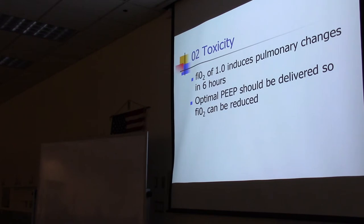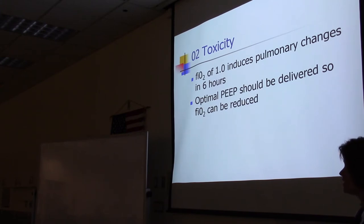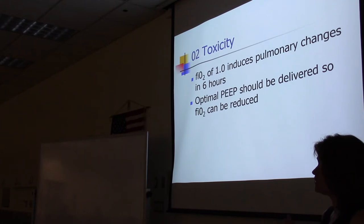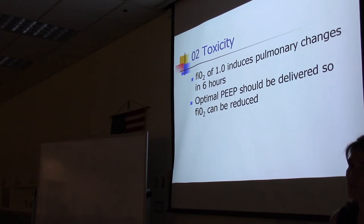Regarding oxygen toxicity, high FiO2s cause damage to the alveolar epithelium, noticeable within six hours of breathing pure oxygen. Within 24 hours, several damaging events can occur. The goal is to wean the FiO2 down to an acceptable level as quickly as possible, and PEEP helps allow that weaning.